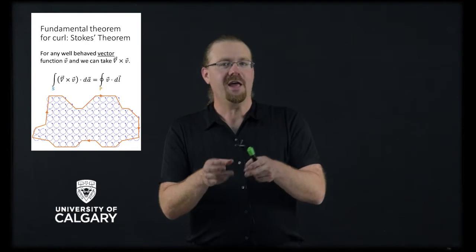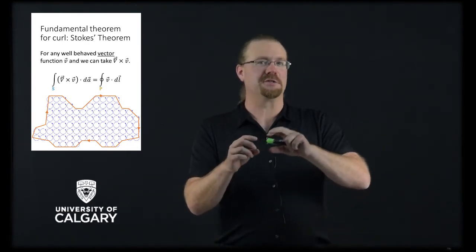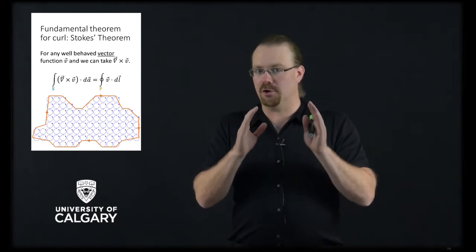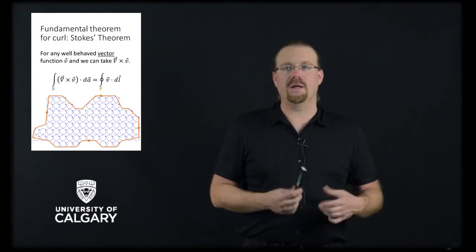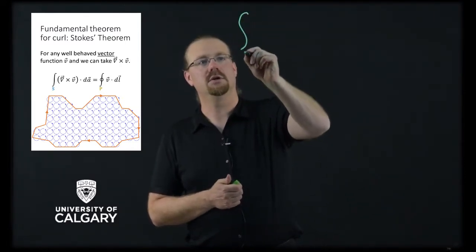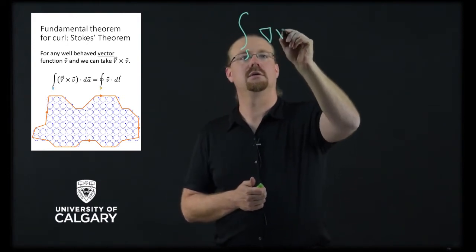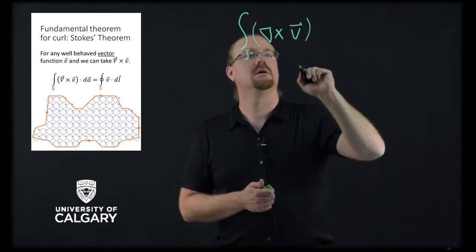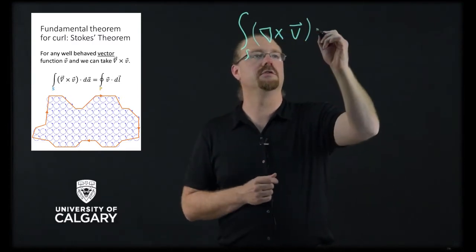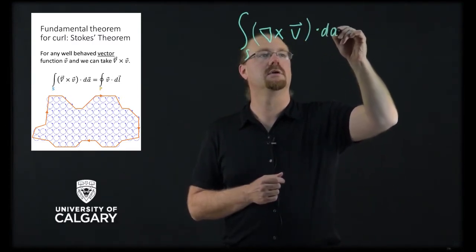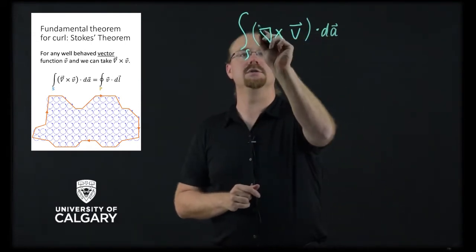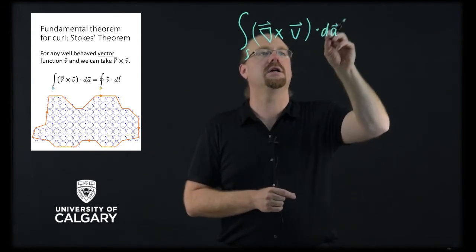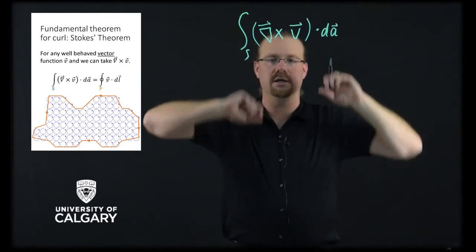We've seen the fundamental theorem of calculus, and we noticed that it looked an awful lot like the fundamental theorem for gradients. We're going to go a little trickier now and we're going to do curls. If we wind up having the integral over some surface of the curl of some well-behaved vector function V, this is now going to be an area integral. This is a vector and the curl of a vector field is itself a vector field, and our dA is a little infinitesimal piece of area — we take the dot product between those two things to get our area integral.